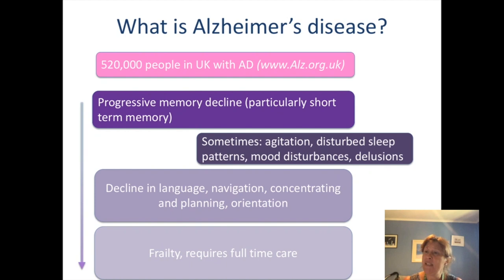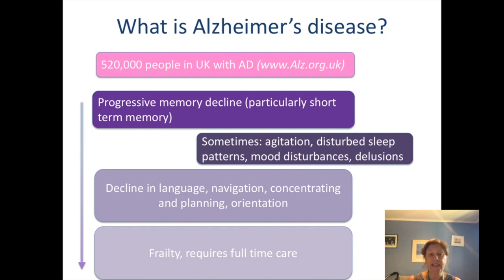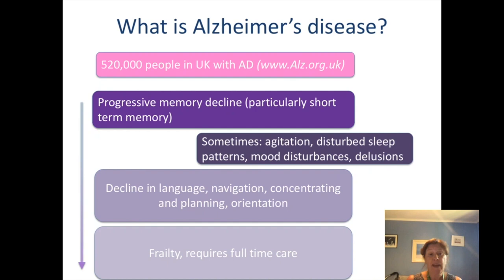Alzheimer's disease affects around 520,000 people in the UK who are living with it at the moment. The disease is accompanied by progressive memory decline, particularly short-term memory. People living with dementia can often remember things from their childhood, but can't remember something from that morning. It's also sometimes accompanied by agitation, disturbed sleep patterns, mood disturbances, and occasionally delusions. As the disease progresses, there's a decline in language, navigation, concentration, planning, and orientation. Towards the end, it is accompanied by increasing frailty and people tend to require full-time care.